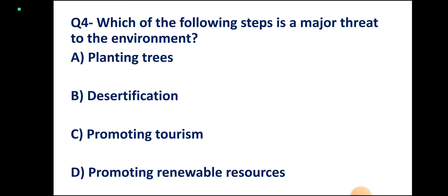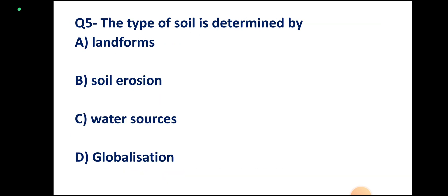Question number 4: Which of the following steps is a major threat to the environment? Options: planting trees, desertification, promoting tourism, promoting renewable resources. Correct answer: desertification, option B.